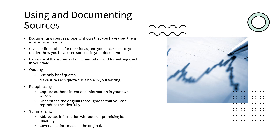Paraphrasing allows us to capture the author's intent and information in our own words. We have to make sure we understand the original thoroughly so we reproduce the idea fully, but it allows us to take the idea of an entire document and say this is what they were saying — and give them a citation because it's still their ideas — without wasting time quoting and over-analyzing things that aren't necessary for our document. Summarizing is abbreviating information without compromise, making sure we cover all the points made in the original. The executive summary is something we do for executives so they don't have to read the entire piece but fully understand it — taking all the ideas and presenting them in a really tight, compact format.